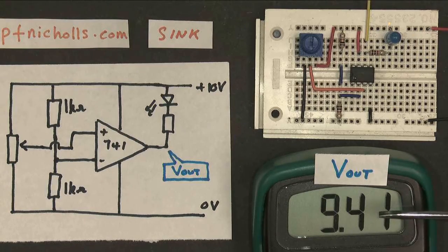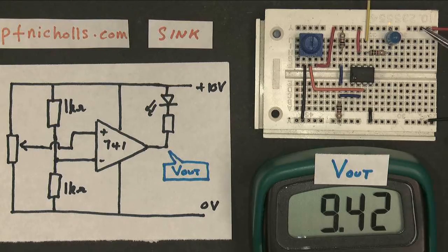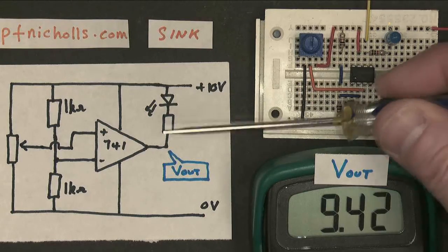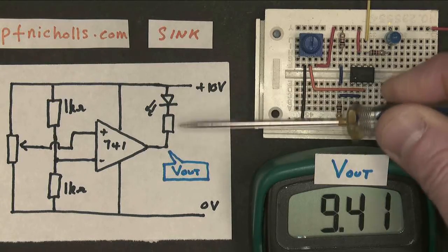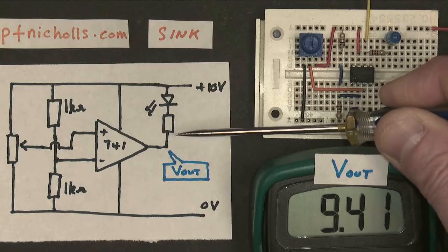Here is our output voltage. At the moment it's 9.4 volts. So we've got 10 volts just here. We've got 9.4 volts just here. There's only a 0.6 volt potential difference across the LED. So the LED doesn't light up.